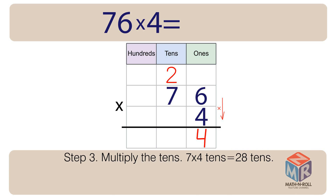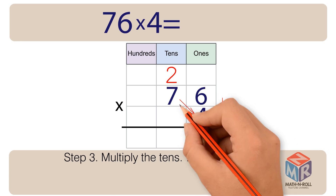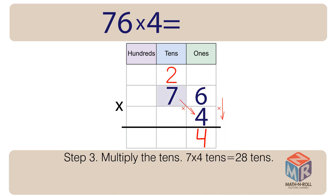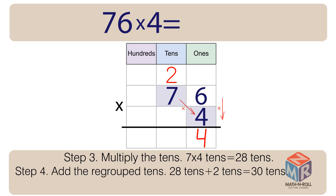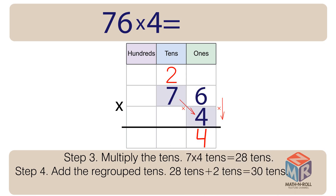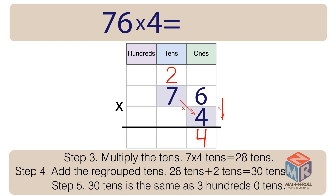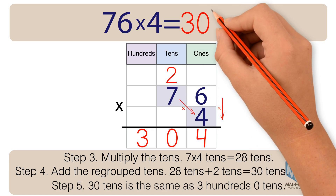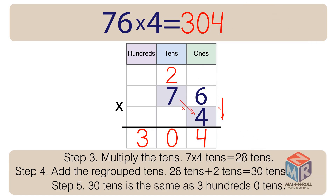Step 3: Multiply the tens. 7 times 4 tens is equal to 28 tens. Step 4: Add the regrouped tens. 28 tens plus 2 tens is equal to 30 tens. Step 5: 30 tens is the same as 300 and 0 tens. So 76 times 4 is equal to 304.